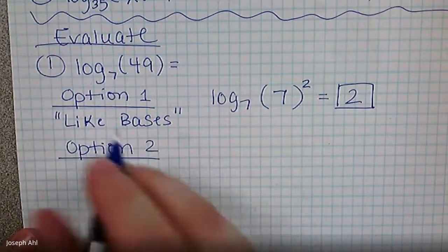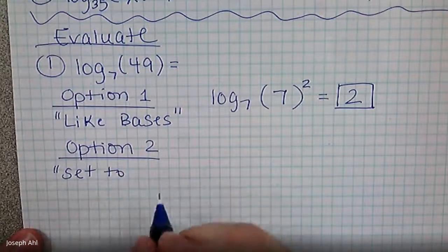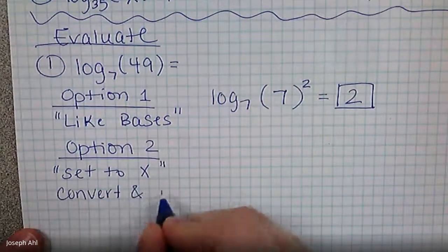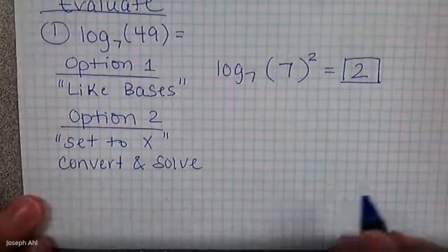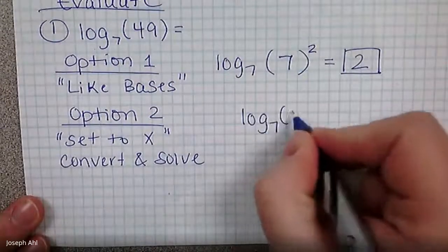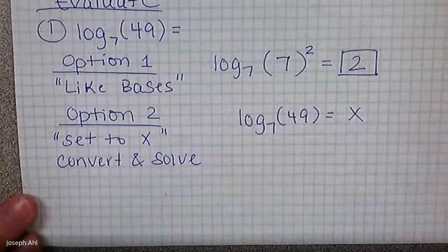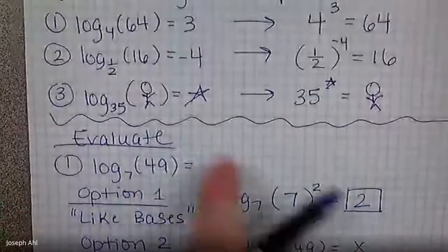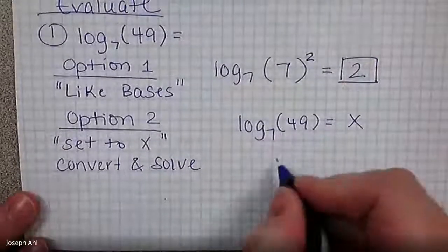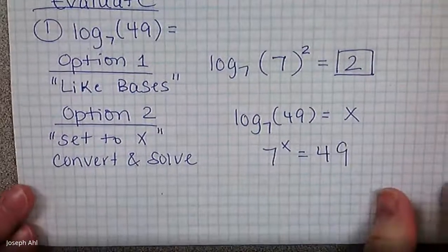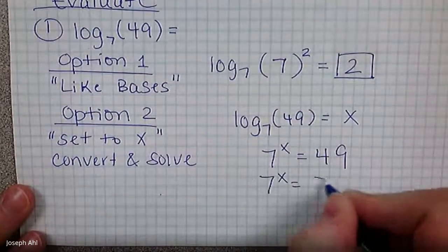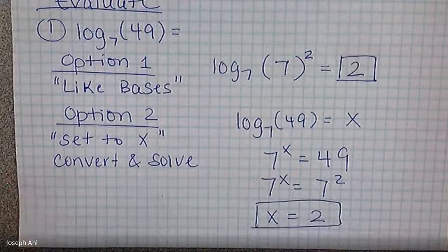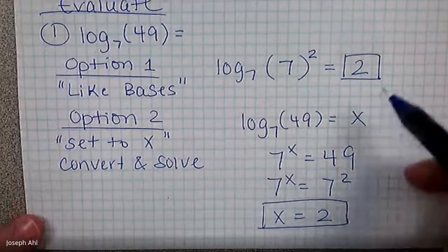Option two is to create an equation: set your expression equal to X, convert to exponential form, and solve. So log base seven of 49 equals X converts to seven to the X equals 49. Since 49 is seven squared, you still use common bases from the last unit to get X equals two. We get the same answer no matter which option we choose. If we can easily do option one, I recommend that route.